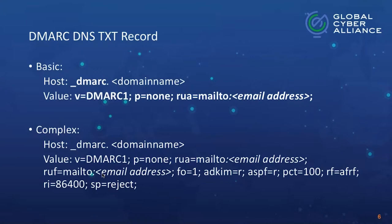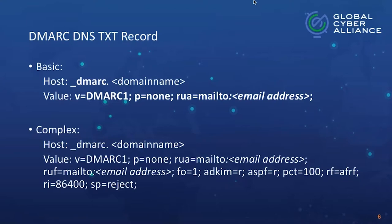The failure reports contain the full message — sender address, recipient address, subject line, and full message body — which could include sensitive information like banking or social security details. Some countries have prohibited forensic reports. Google, Hotmail, and Microsoft have decided not to send them, though all do send aggregate reports. If you want to add the RUF tag, you can — it won't hurt anything — but just be aware you may not receive any.